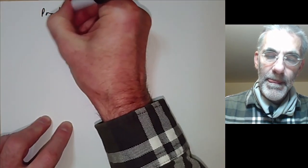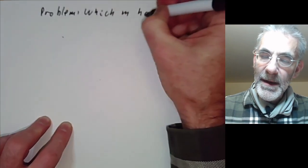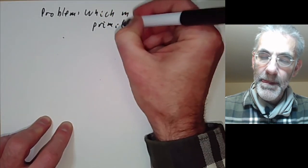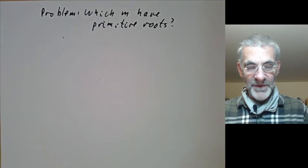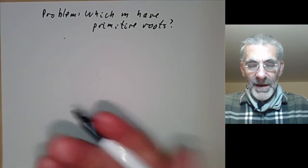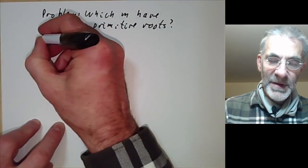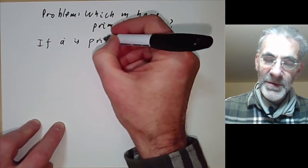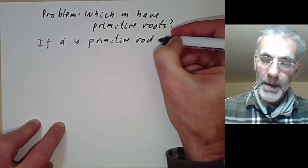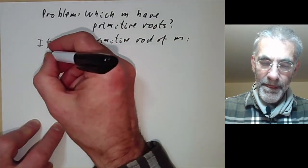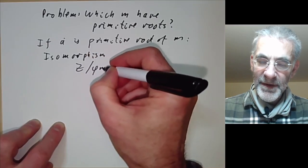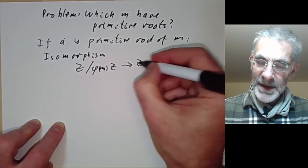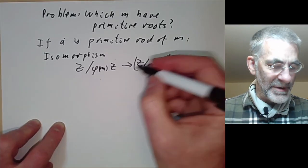Now we get to the main problem: which numbers m have primitive roots? We saw that all numbers up to 11 other than 8 have primitive roots. If a is a primitive root of m, we get an isomorphism from Z/(φ(m))Z to (Z/mZ)*, taking n to a^n, where φ(m) is the order of (Z/mZ)*.